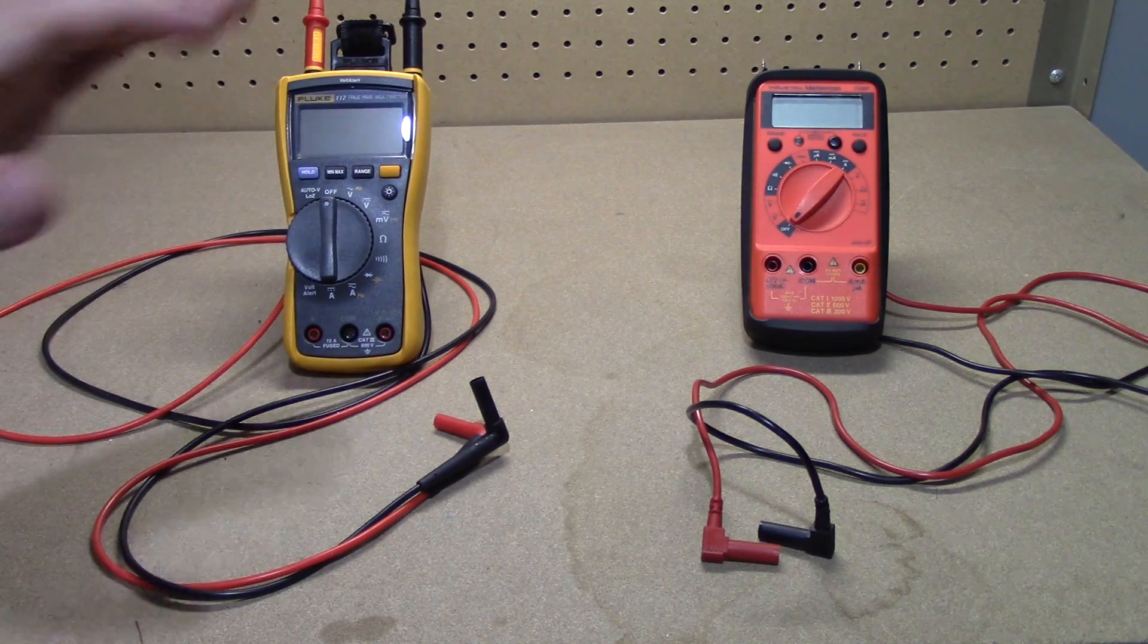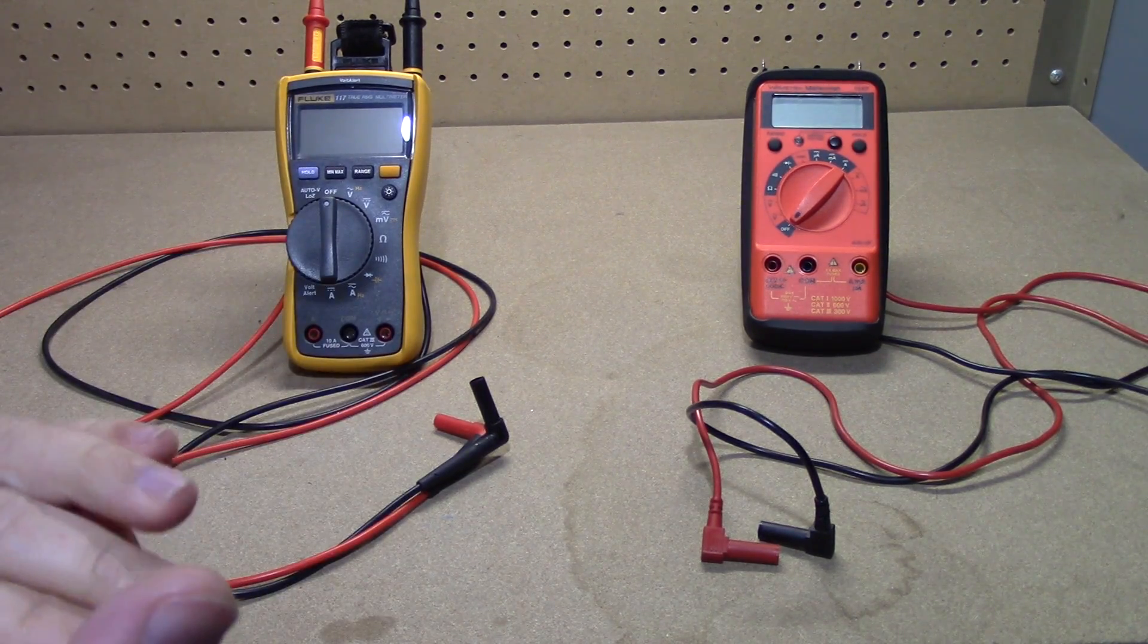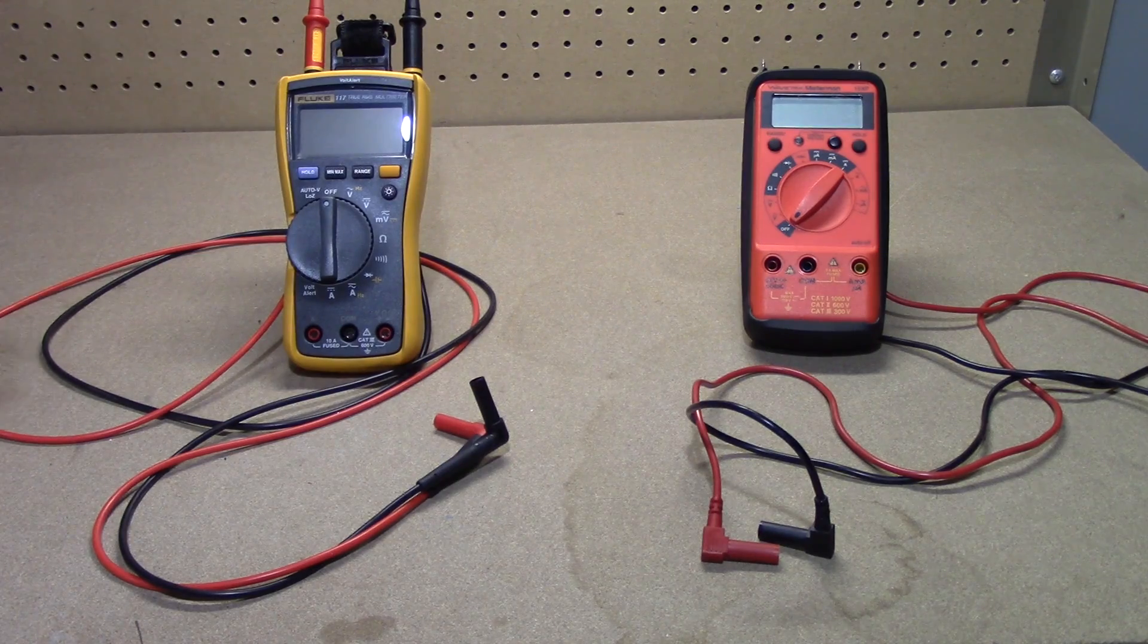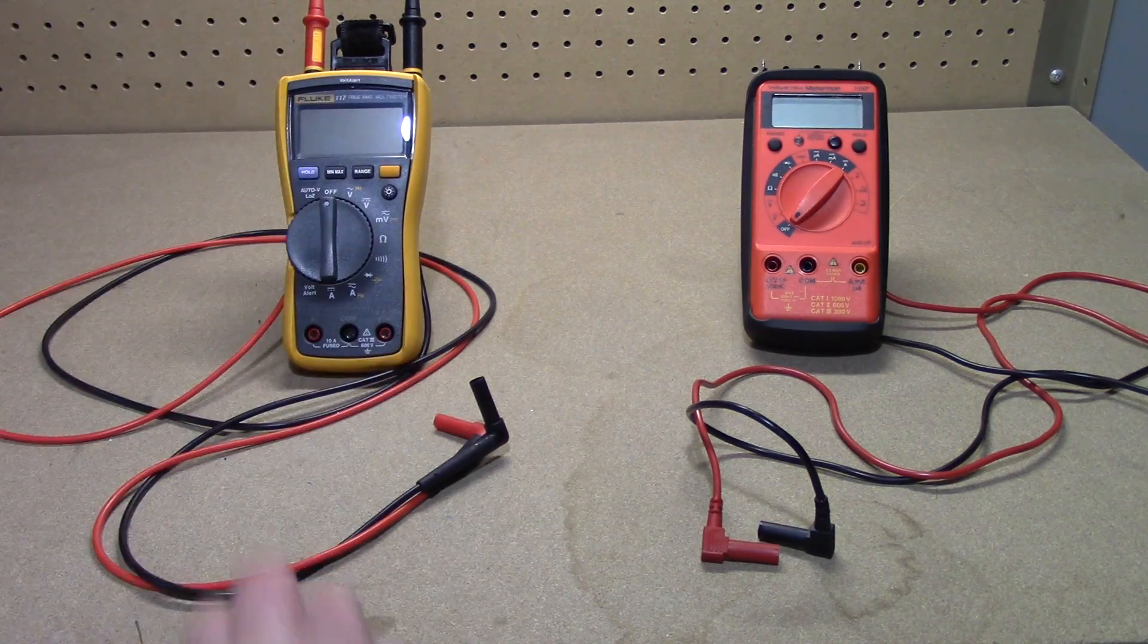They can measure current, they can measure voltage both DC and AC, they can measure resistance, and they can check diodes and give you a beep if you have connectivity.